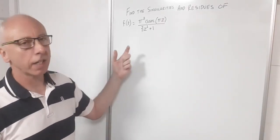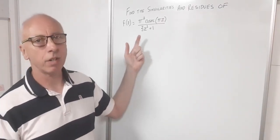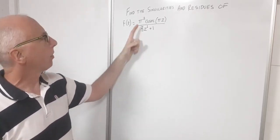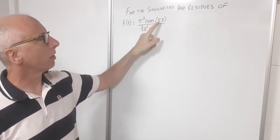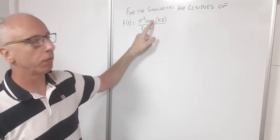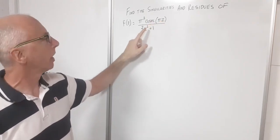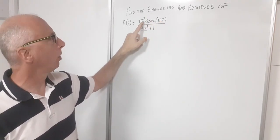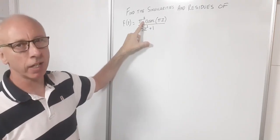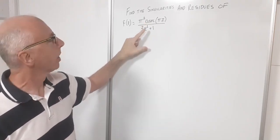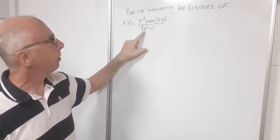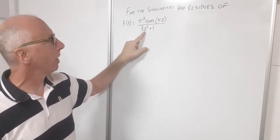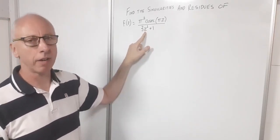In this question we're going to find the singularities and the residues of this function. We've got π² cosecant(πz), where πz is the input for cosecant and π² is just a multiplier — somewhere just under 10. Then we've got denominator 3z² + 1, where z is our complex variable.